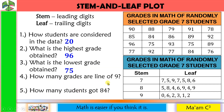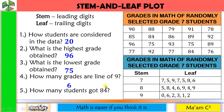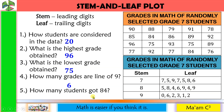How many grades are in the line of 9? Look for 9 in the stem column and count the number of leaves — there are 6 grades that are in the line of 9. And last: how many students got 84? Look for 8 in the stem and count how many 4s are in the leaf column — there are 2 students who got 84.